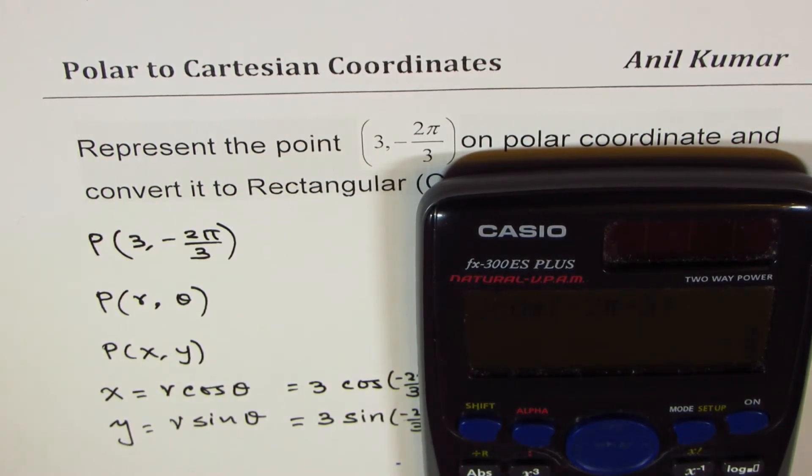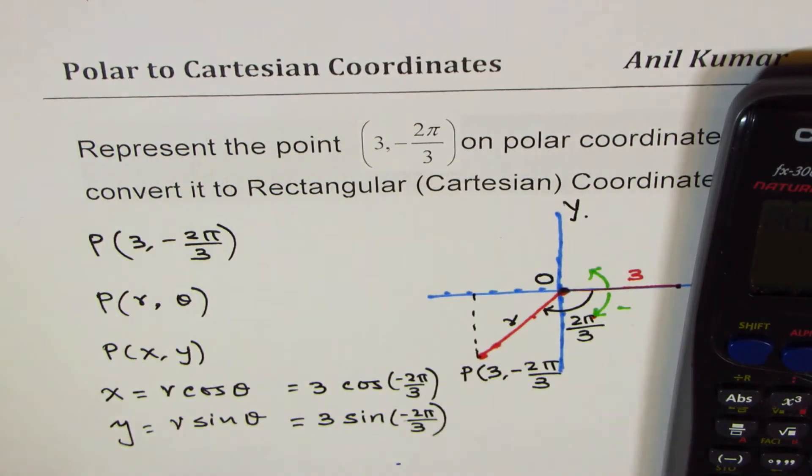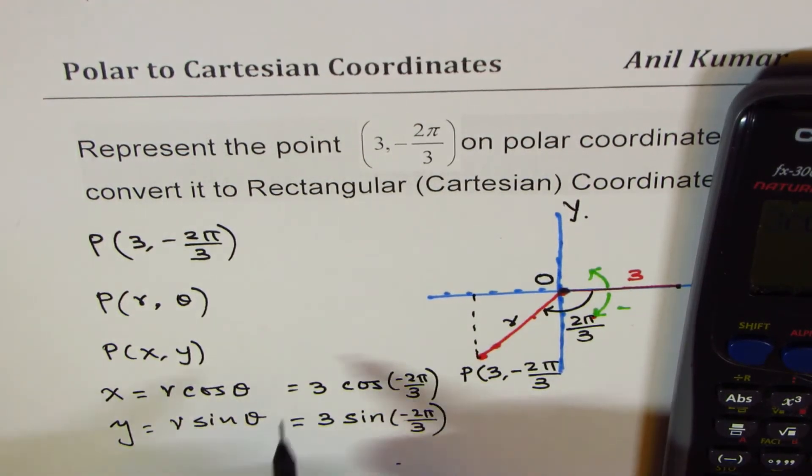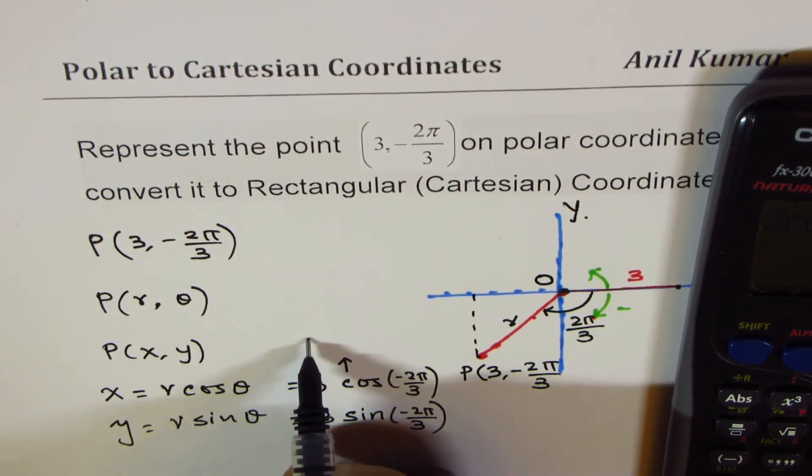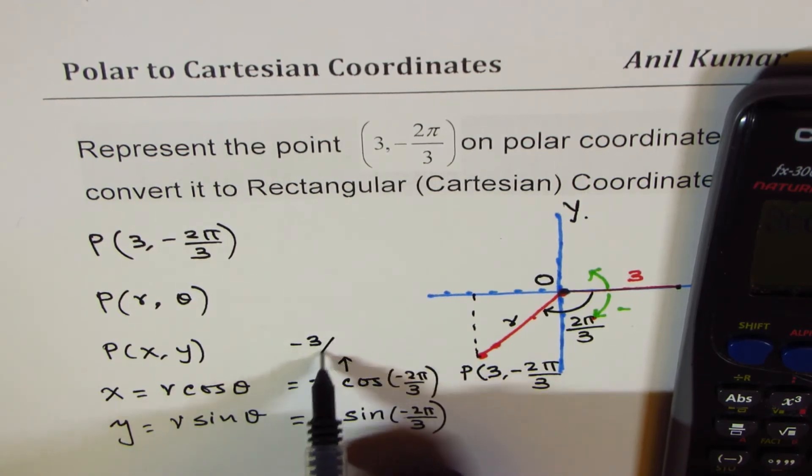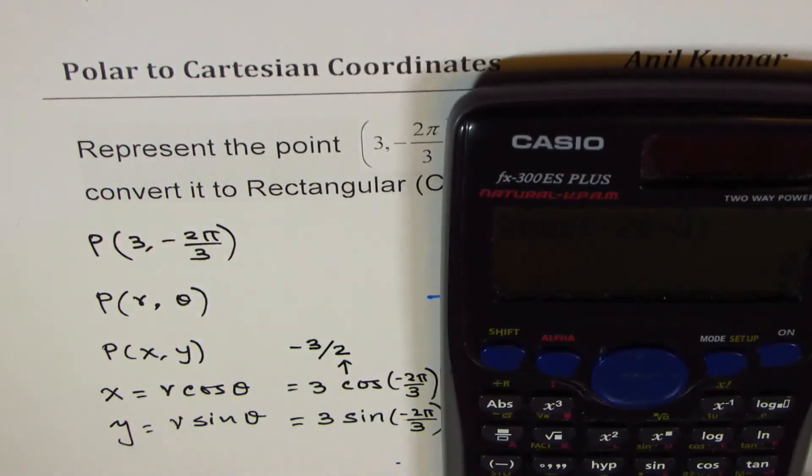You could use special triangles to get this answer. 3 times cos(-2π/3) is -3/2, so the X value equals -3/2.